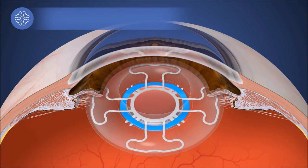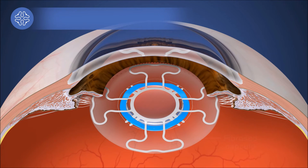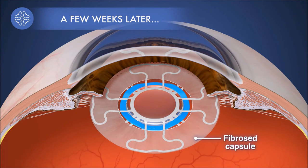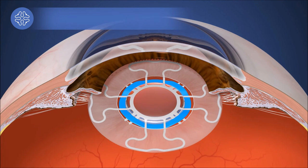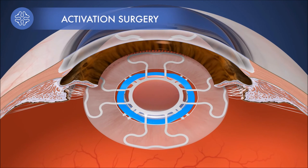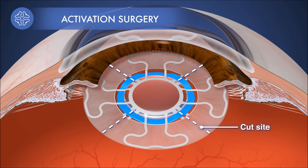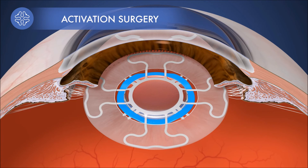The capsular bag collapses and adheres to the haptics of the Z-lens. After a few weeks, the bag fibroses and becomes stiff, which prevents movement. To restore movement, we activate the Z-lens by cutting the capsular bag in between the haptics and releasing the restraining device. Activation can be done non-invasively with a YAG or femtosecond laser.